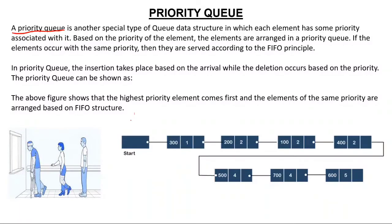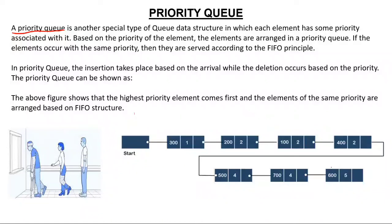Looking at the figure, this is somewhat like a Linked List and it is exactly like that. Element 300 has Priority 1, so it stands first. Then element 200 has Priority 2, and element 100 also has Priority 2. Since they share the same priority, they are arranged by arrival order — 200 came first, so 200 is before 100. Then 500 has Priority 4, then 700 with the same priority, and 600 has the least Priority of 5. This is how a Priority Queue looks.